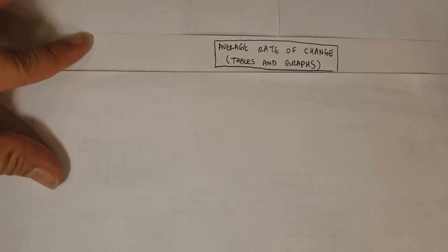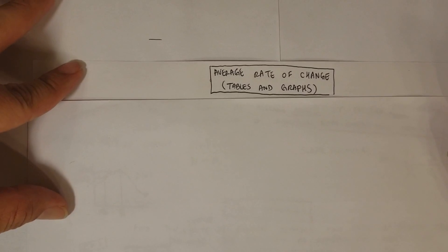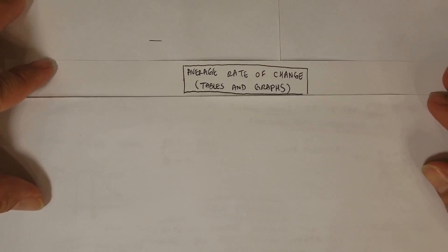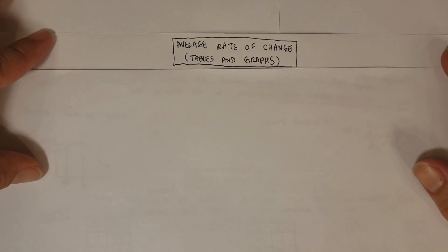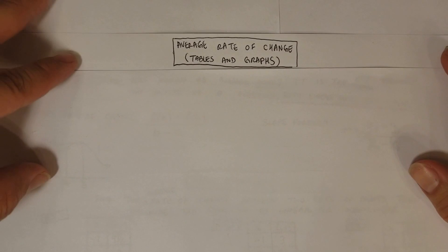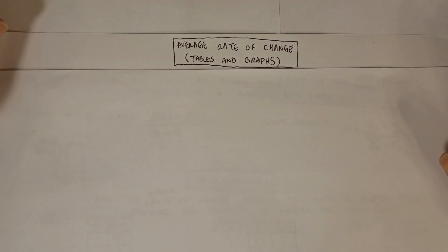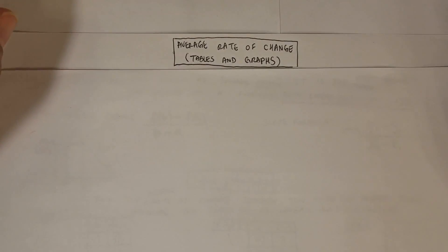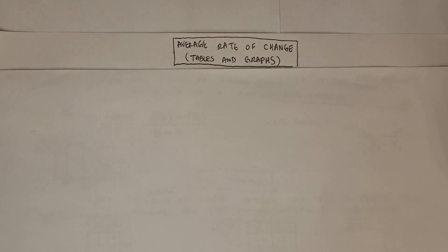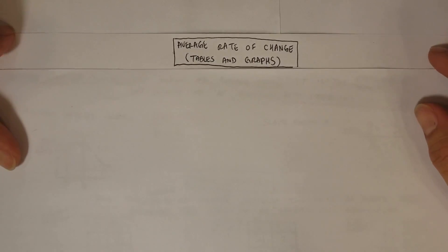In this video we're going to be talking about finding the average rate of change from both tables and graphs. So if they tell you to find the average rate of change, you can do that from a table and a graph.